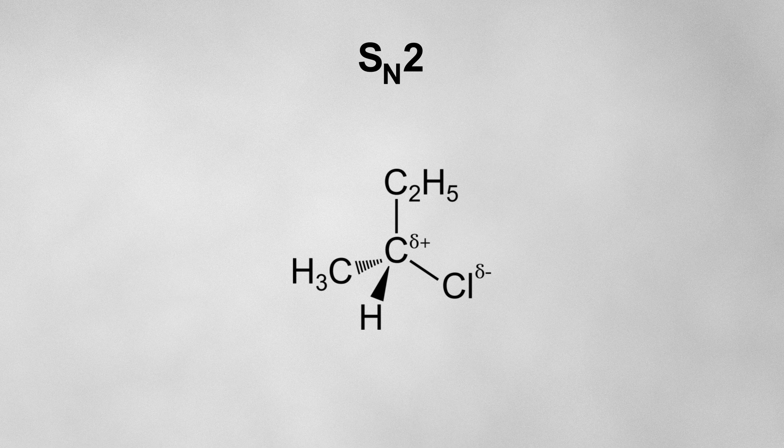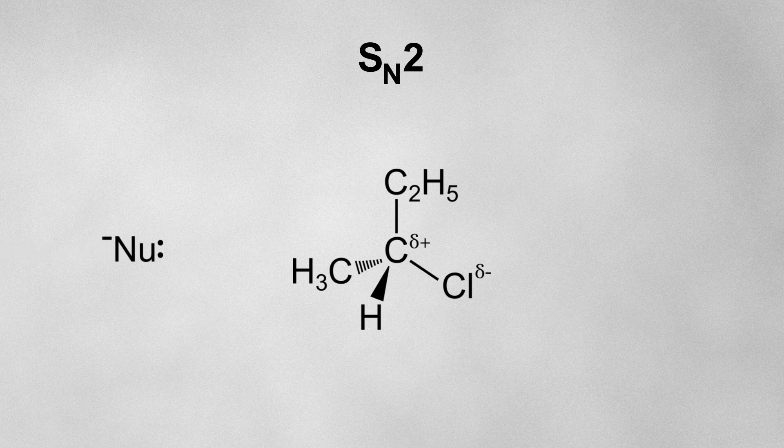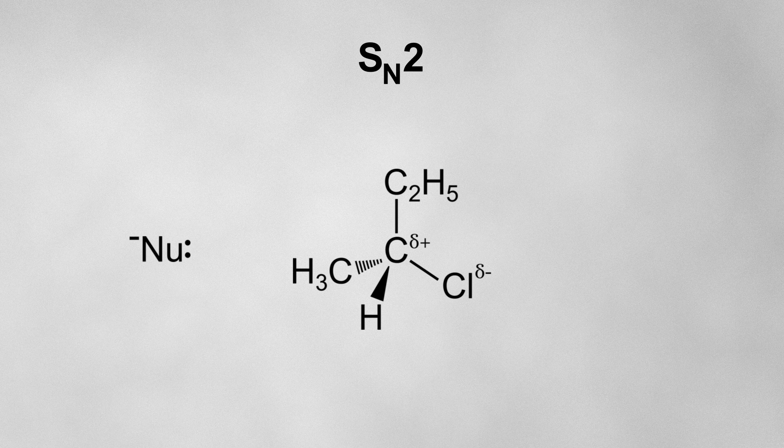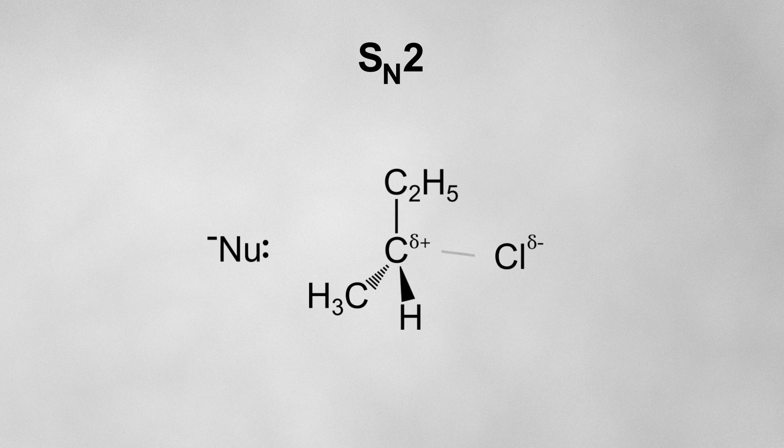How about SN2? Let's take a look at the 3D structures during an SN2 reaction. The nucleophile always attacks the halogeno alkane from the opposite side to where the halogen is, because this direction has the easiest access to the delta plus carbon. This results in a transition state like this.